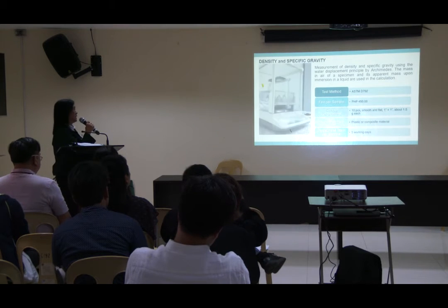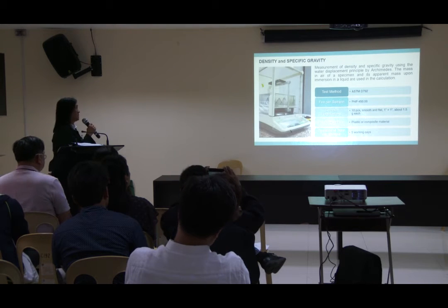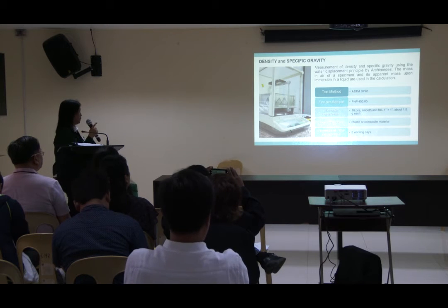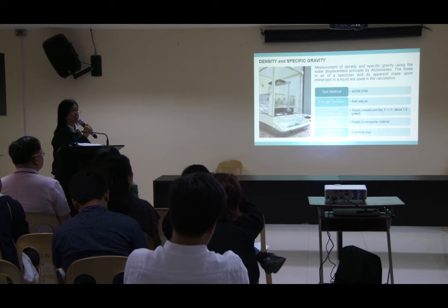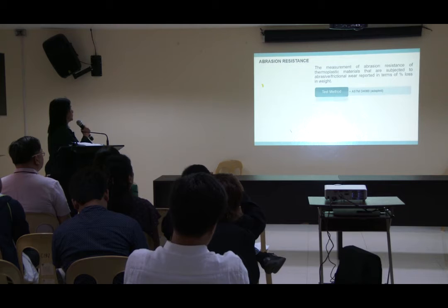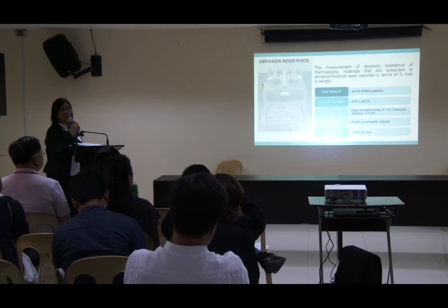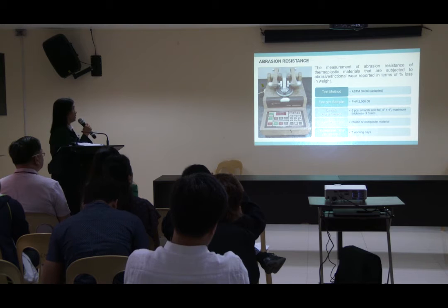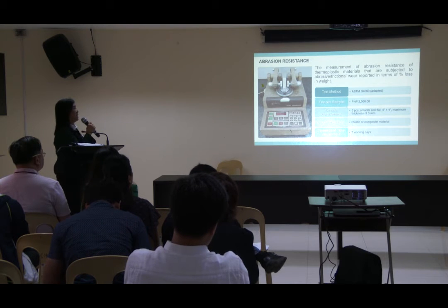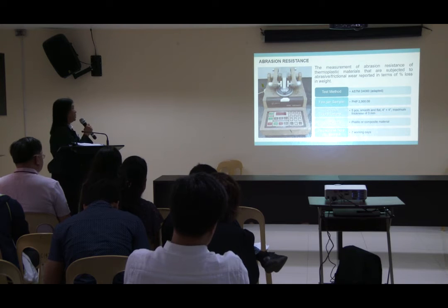For density and specific gravity, we use the water displacement method and Archimedes Displacement. The test method is ASTM D792. For abrasion resistance, it is the measurement of abrasion resistance of plastic materials subjected to abrasion or functional wear, reported in terms of percent loss in weight.